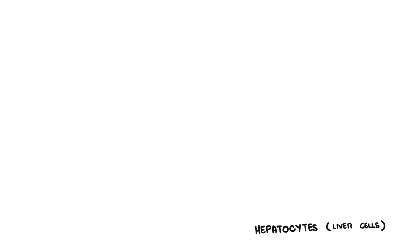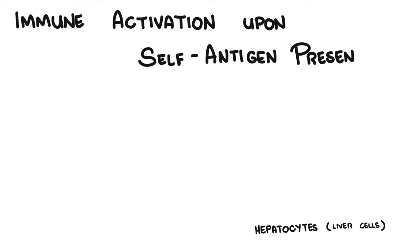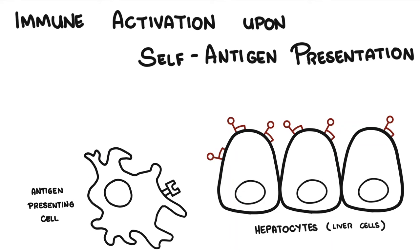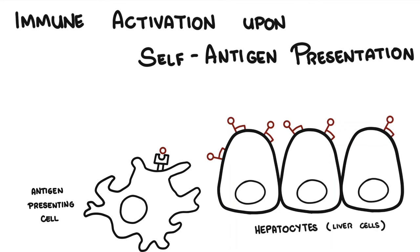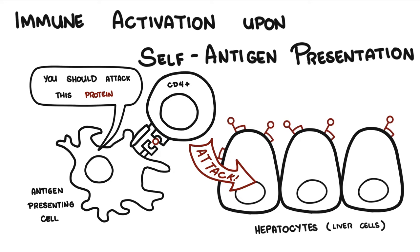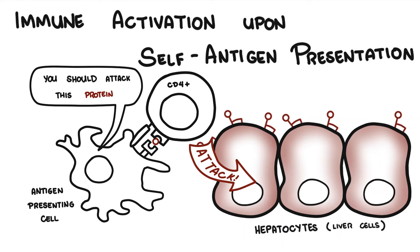The second theory for autoimmune hepatitis is immune activation upon self-antigen presentation. The body's own liver proteins are presented by specialized antigen-presenting cells to CD4 T helper cells, which then trigger an immune response that leads to liver damage, causing autoimmune hepatitis.